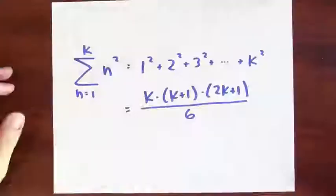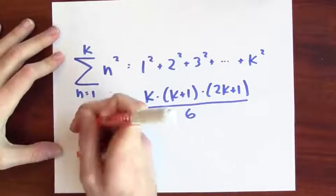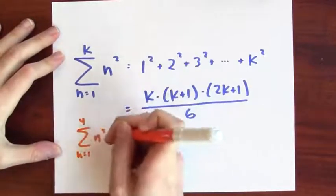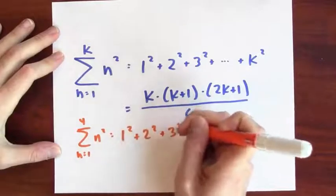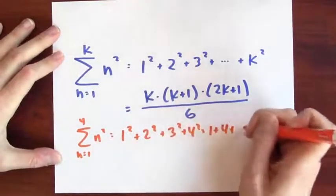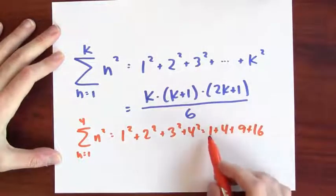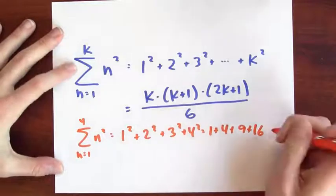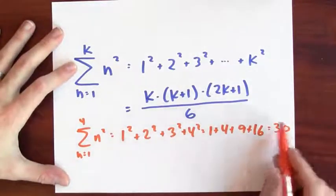Really? Well, we can try it for some specific value. What if I do the sum n goes from 1 to 4 of n squared? That's 1 squared plus 2 squared plus 3 squared plus 4 squared. That's 1 plus 4 plus 9 plus 16. 4 and 16 make 20, 1 and 9 make 10. 20 plus 10 is 30. So the sum of the first 4 perfect squares is 30.